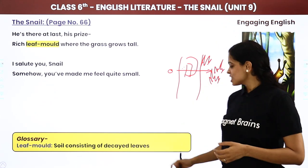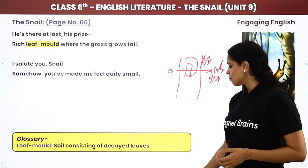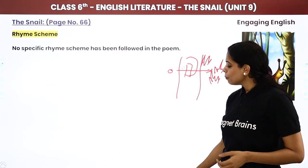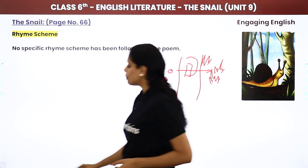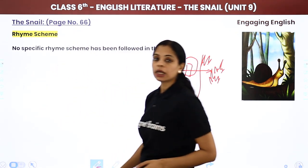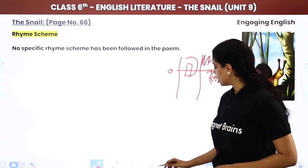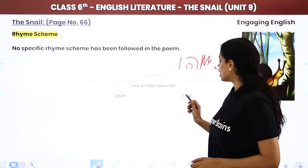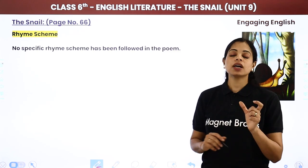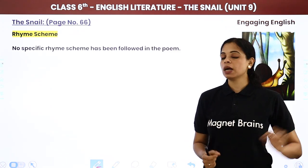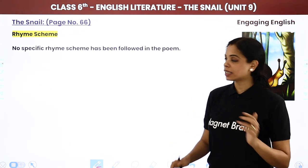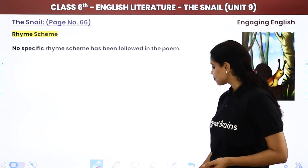Now this was the poem. Ab is poem mein there is no rhyming pattern. Koi bhi rhyming pattern nahi — agar aap dekhoge toh har sentence joh hai ends with a different sound. Toh yahaan pe koi rhyming scheme nahi hai.